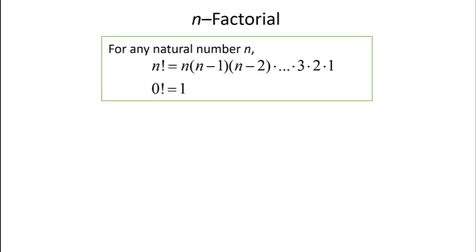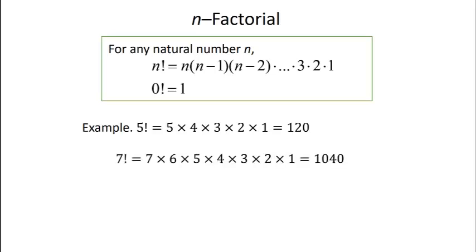For example, 5 factorial is 5 times 4 times 3 times 2 times 1, or 120. 7 factorial is 7 times 6 times 5 times 4 times 3 times 2 times 1, or 5040.